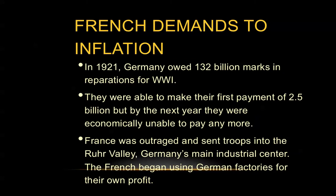Germany was able to make their first payment of 2.5 billion marks, but by the next year they were economically unable to pay those payments anymore. France, being outraged at this lack of payment, came in with its military, took over the Ruhr Valley in Germany — its main industrial center — and actually started manufacturing goods out of German factories for their own profit.